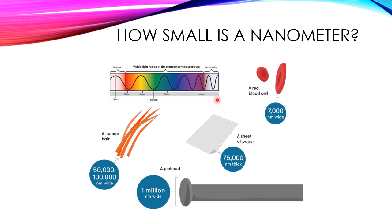So how small is a nanometer? The visible spectrum of light going from violet to red goes from about 350 nanometers to about 740 nanometers, like I mentioned in the previous slide.